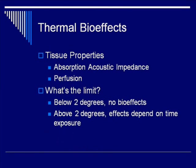Finally, let's discuss two tissue properties: absorption or acoustic impedance, and perfusion. Absorption or acoustic impedance refers to whether the tissue is bone or kidney — the more acoustic impedance it has, the more it will absorb. Perfusion is the blood supply. The more blood you have washing into an organ, the more heat it will be able to wash out — it's kind of like air conditioning for the cells. But there's a limit: according to fetal studies, the fetus being the most sensitive area for thermal bio-effects, so long as you keep the local heating below 2 degrees, you will have no bio-effects. If you go above 2 degrees, the amount of bio-effects will depend on the time of exposure.